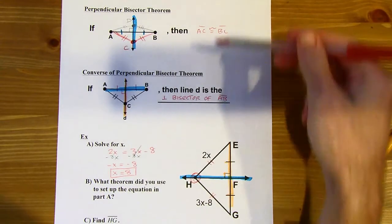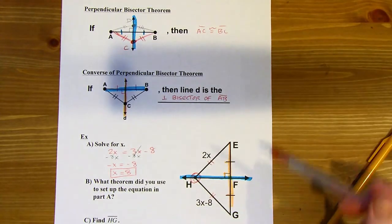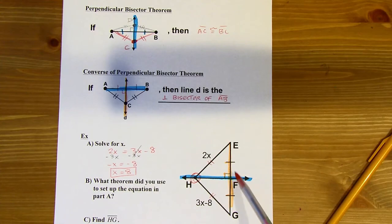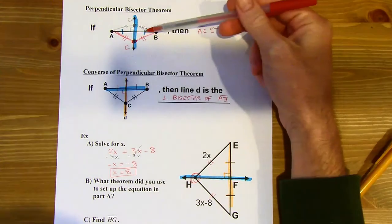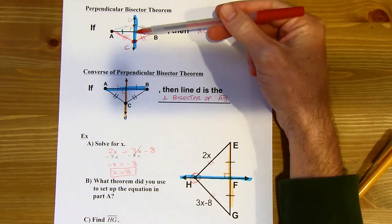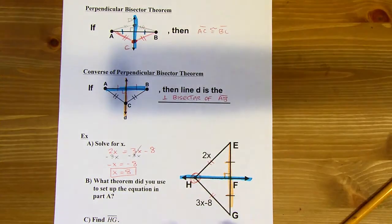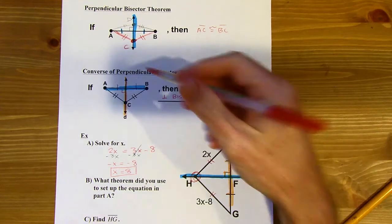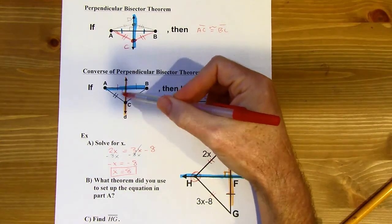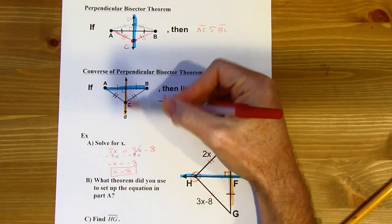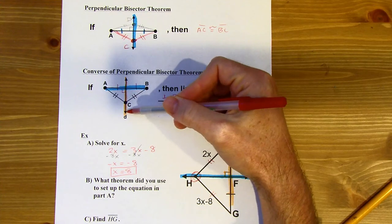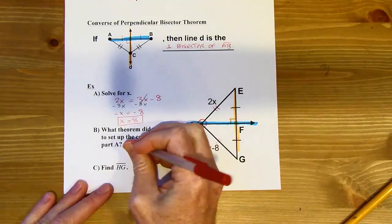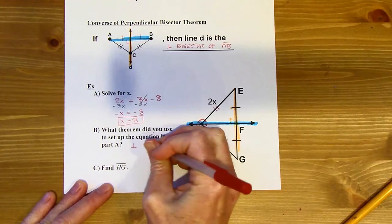I can use the Perpendicular Bisector Theorem here — the original one, not the converse — because I started with a perpendicular bisector. In the converse, I'd be showing something is a perpendicular bisector, but here I could see from the beginning that the blue line is the perpendicular bisector. So this is the Perpendicular Bisector Theorem.